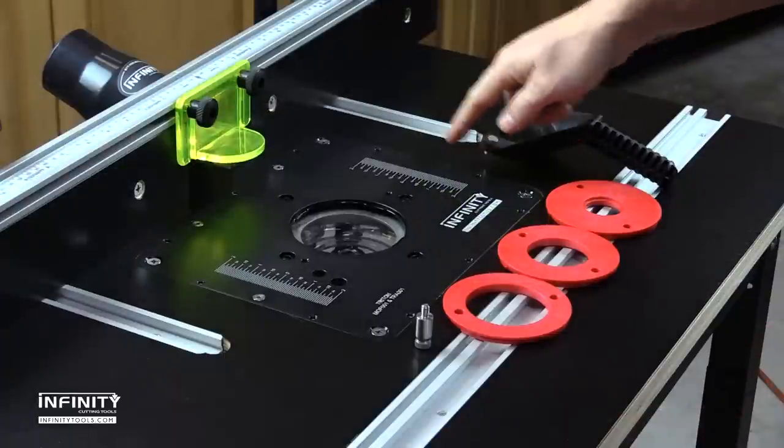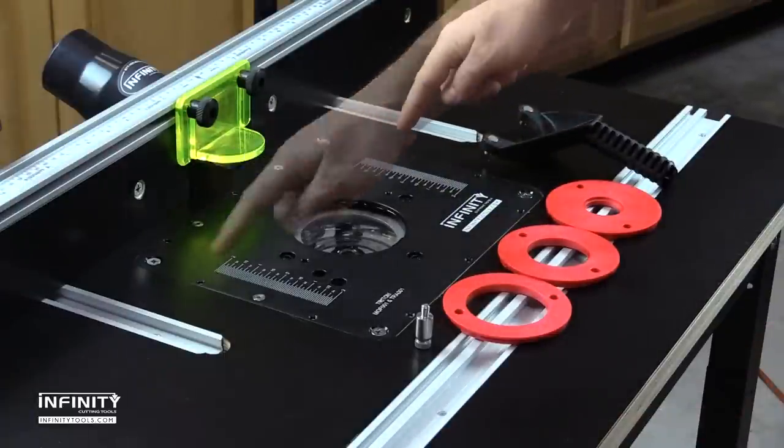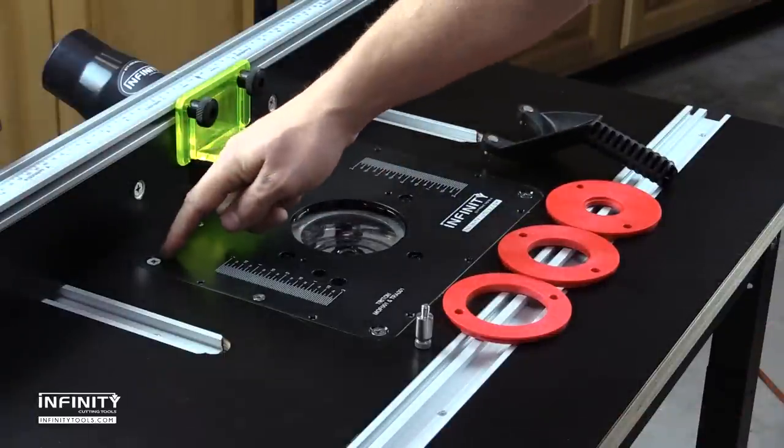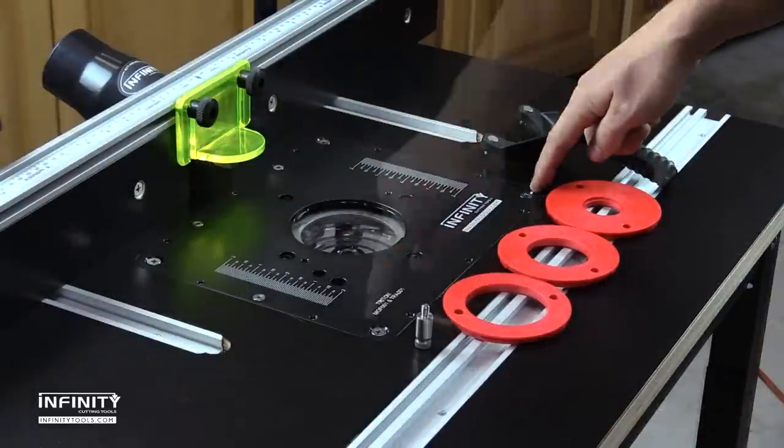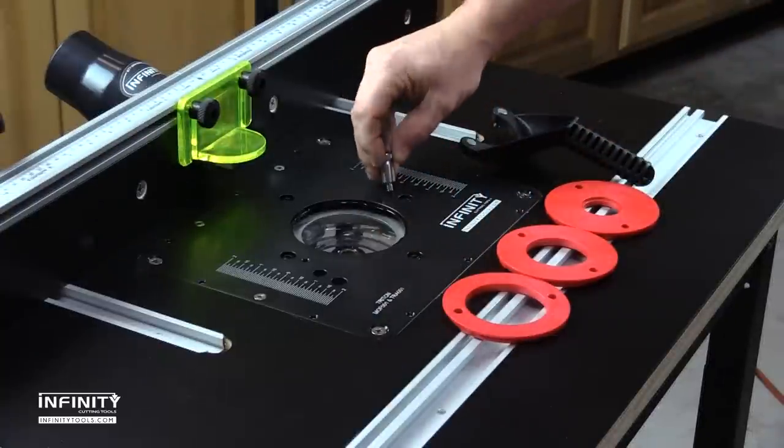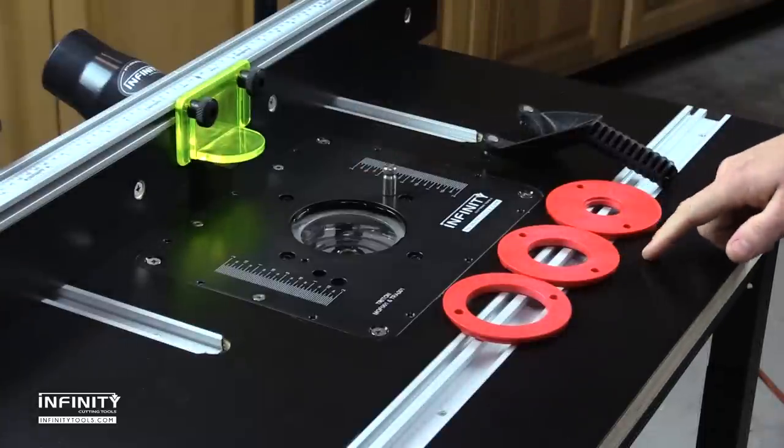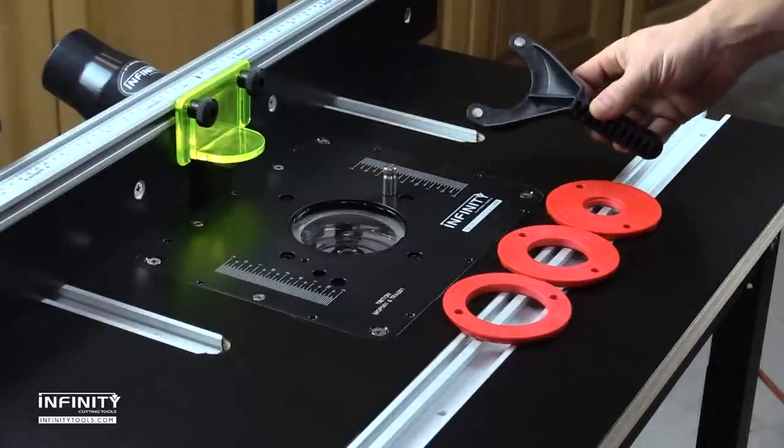Each plate comes with stainless steel leveling set screws, stainless steel corner locking screws that lock the plate securely into the Infinity Router tabletop, a stainless steel start pin, three tablock-style reducing rings, and a reducing ring wrench.